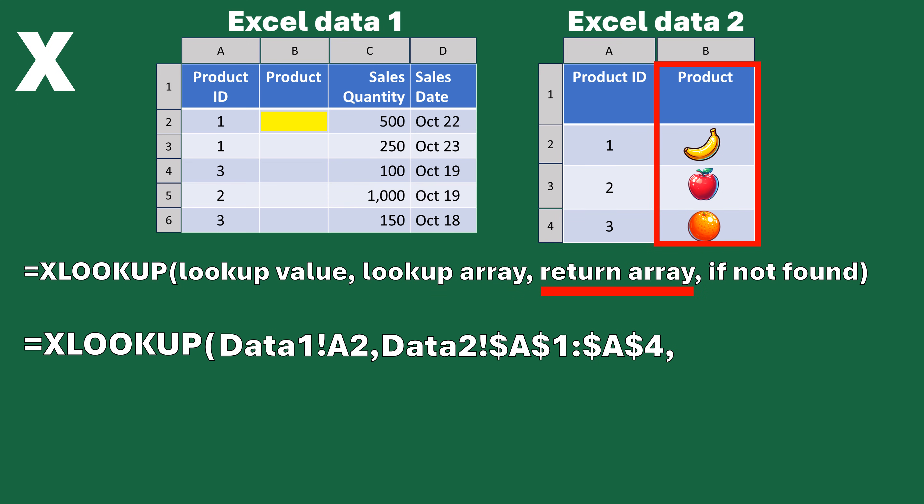Now we have to define the return array — the data we want to come back. We're going to highlight the fruit column: banana, apple, and orange — what we want to return. Instead of before, where we said 'column 2,' now we actually define that column explicitly. So in the formula, we do B1 to B4 with dollar signs to lock in the reference. Instead of defining the entire table and using a number, we now define both columns we need separately.